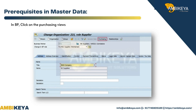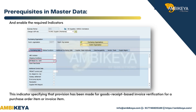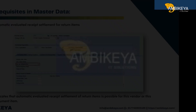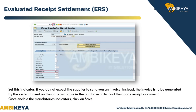Vendor Creation — BP. In BP, click on the Purchasing Views, select the Purchasing Data tab and maintain the payment terms. Enable the required indicators: the GR-based invoice verification indicator, and the Automatic Evaluated Receipt Settlement for Return Items indicator, which specifies that automatic ERS of return items is possible for this vendor or document item.